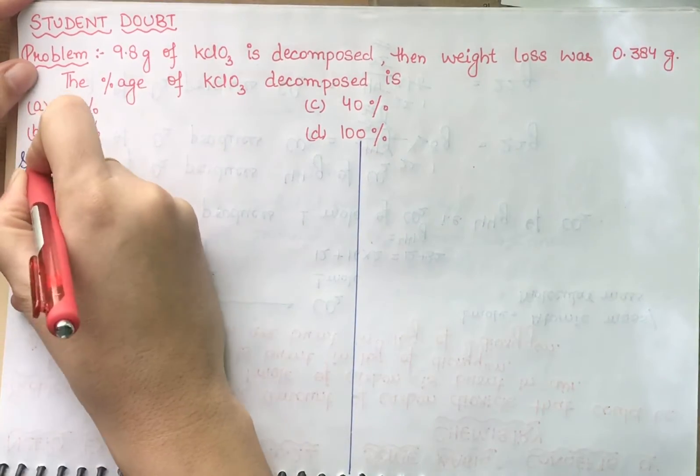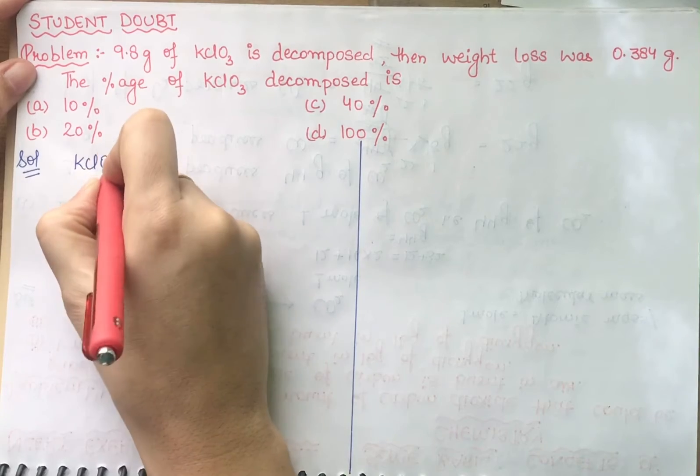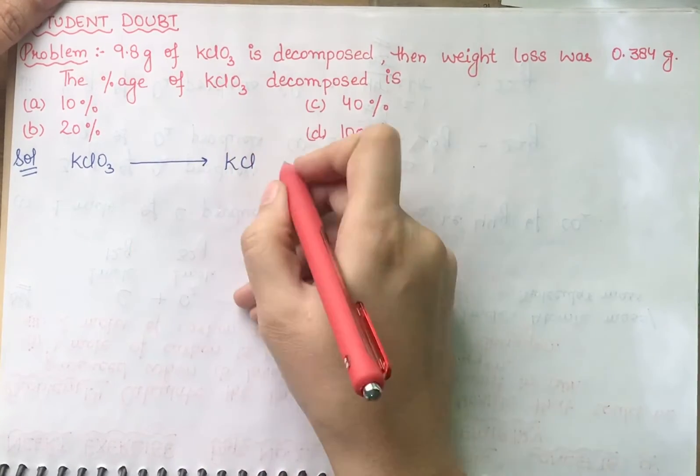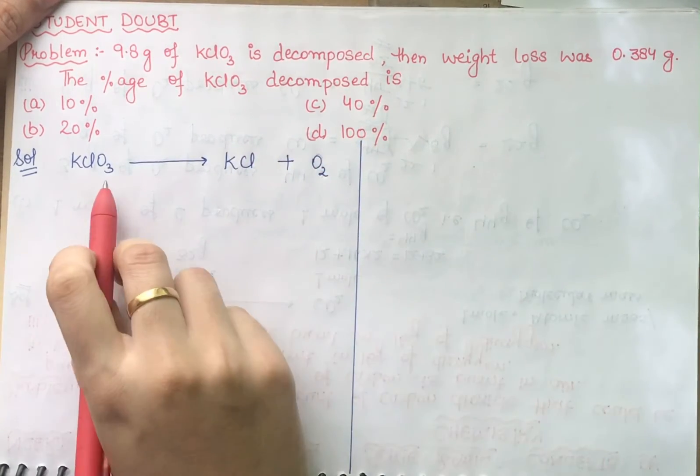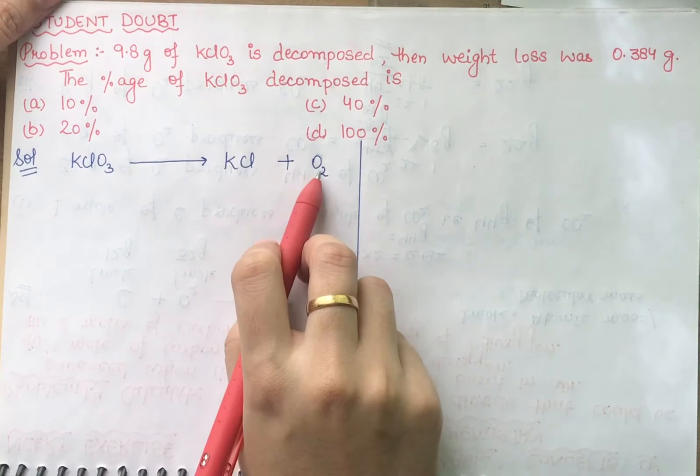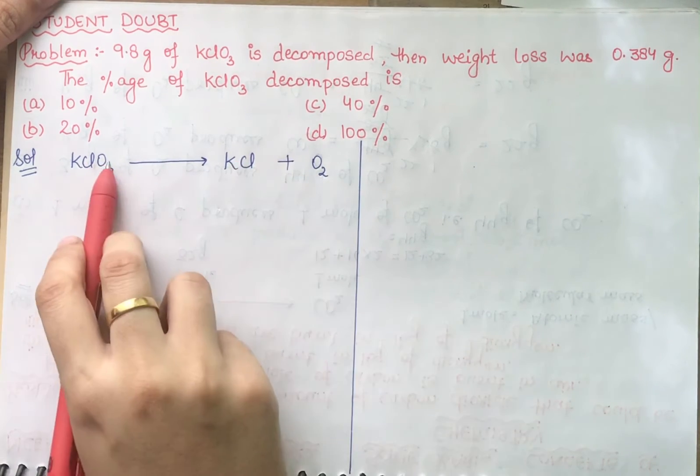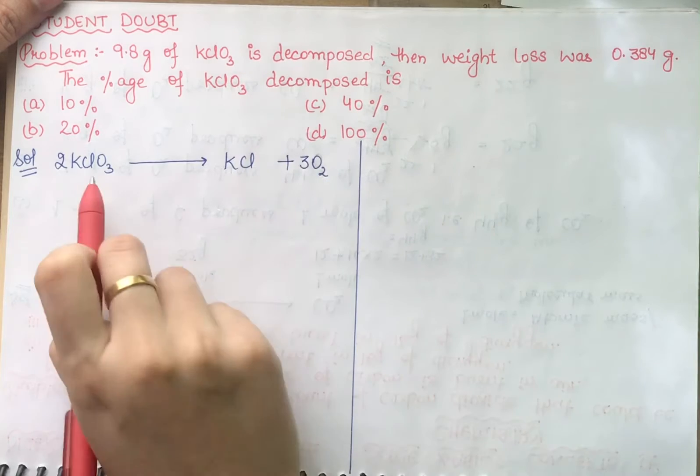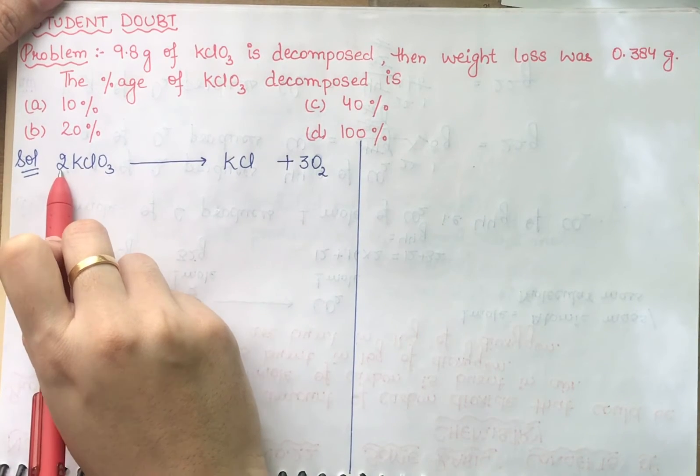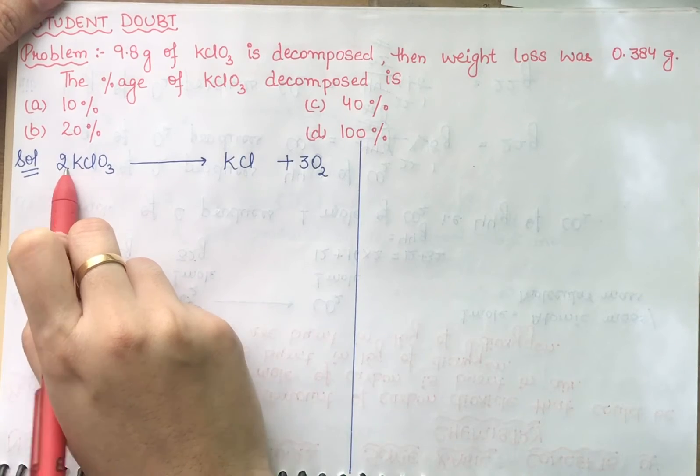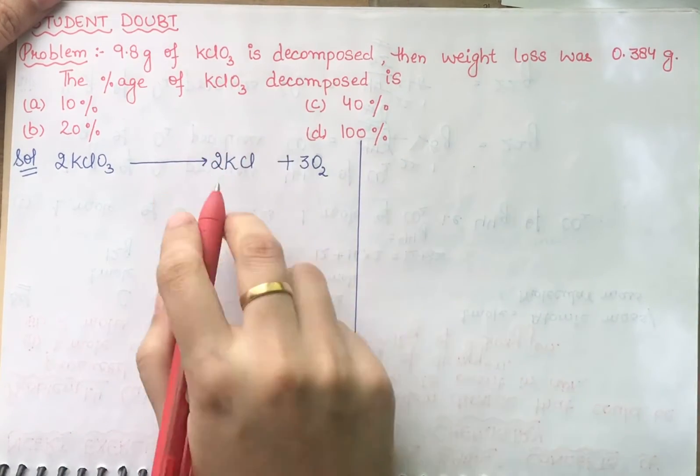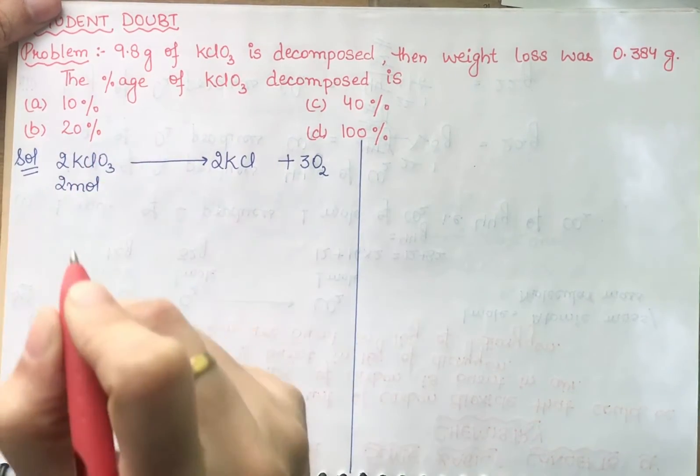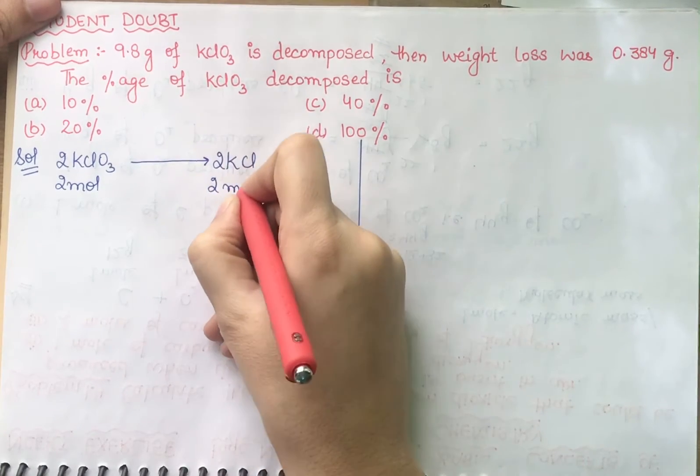First of all, we will write the reaction. KClO3 is decomposed when you heat it. KCl plus O2. Now we have to balance the equation. We have 2 oxygen here and 3 oxygen here. If I want to balance, put 2 here and 3 here. Now oxygen is 6, but KCl is 2 on one side and 1 on the other, so if I put 2 here, then the equation is balanced.